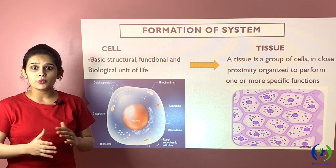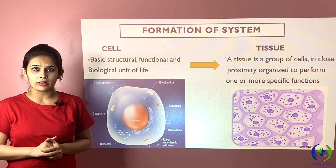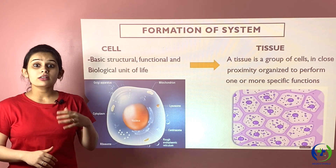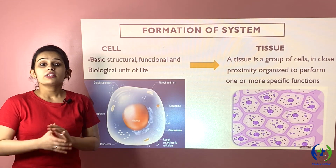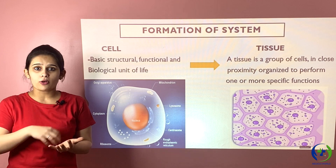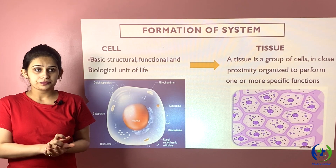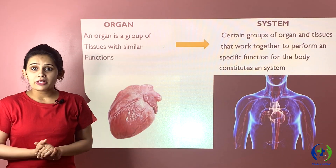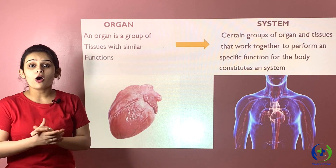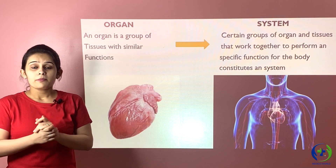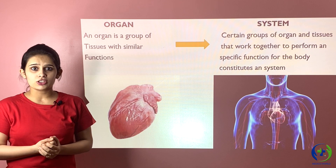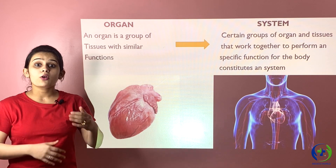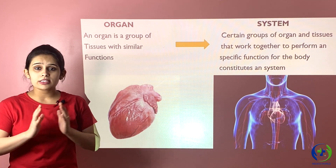Now let's see how a system is formed. The first comes the cell — cell is the basic structural and functional unit of life, also called the building block of life. When a group of cells performing a specific function comes together, they form a tissue. Tissue is a group of cells arranged in close proximity performing a specific function. When a group of tissues come together performing similar functions, they form an organ. An organ is a group of tissues coming together performing a specific or similar function. When two or more organs perform a specific function for the body, they constitute a system.